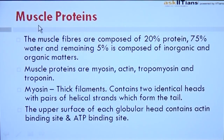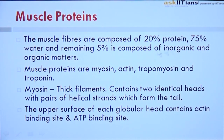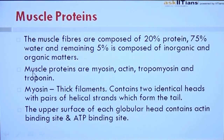Before going into the theory of muscle contraction, let's see what are the muscle proteins. A muscle fiber is composed of 20% protein, 75% water, and the remaining 5% is composed of inorganic and organic matters. The muscle proteins are myosin, actin, tropomyosin, and troponin.